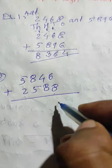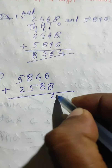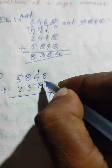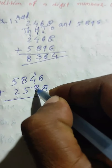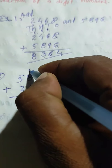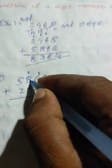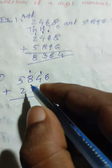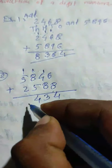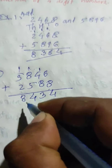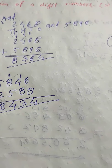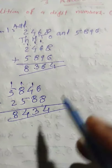Six plus eight is fourteen, carry one. Eight plus five is thirteen, carry one. Eight plus five is thirteen plus one is fourteen, carry one. Then five plus three is eight - so the answer is eight thousand four hundred thirty four.